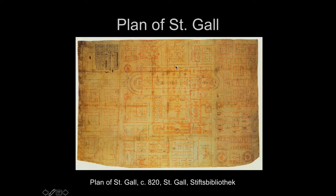Every part of Carolingian society was about reinventing things. This document was found in a library when they were repairing another book — it fell out of the binding. It's a miracle it survived. This is an architectural plan for an ideal monastic community from the Carolingian period, showing how they were reinventing all of society. This is called the Plan of St. Gall.